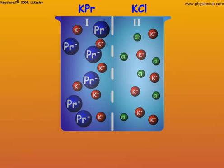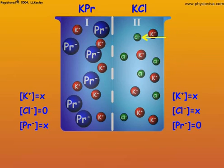In this example, side 1 is a solution of potassium cations combined with an impermeable anion such as an anionic protein. Side 2 is a solution of potassium and chloride ions in concentrations that are equimolar with the ions on side 1.